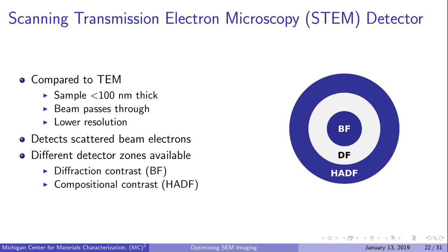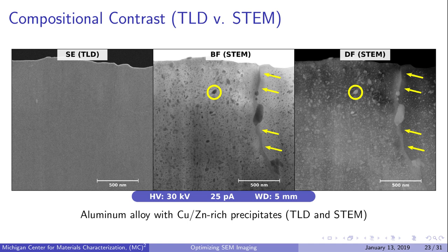Now let's look at some images created with the TLD and STEM detector. This series shows an aluminum alloy imaged using the TLD and two STEM modes: bright field and dark field. With the TLD, we're detecting secondary electrons from the surface, which appears relatively smooth and featureless. In bright field STEM mode, we're looking through the sample and can see much more information, including a grain boundary running vertically that was almost invisible using the TLD. We can also see copper and zinc rich precipitates throughout the sample. Because these precipitates are heavier than the aluminum matrix, they scatter to higher angles, appearing dark in bright field and bright in dark field mode. The same features are visible in both modes, but the colors are inverted.